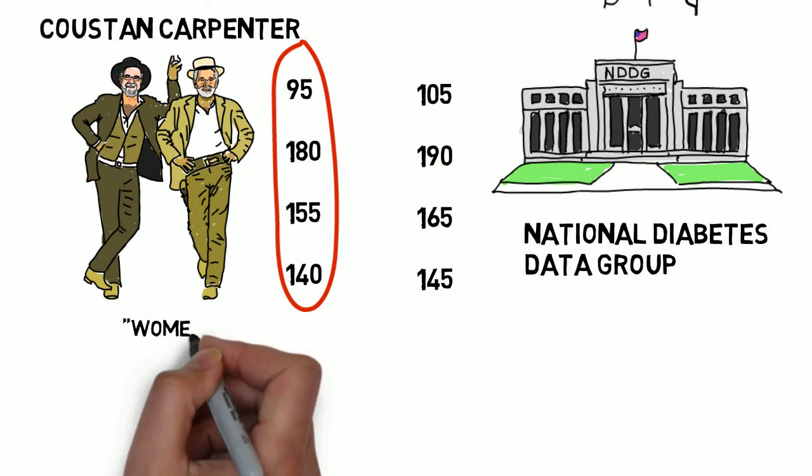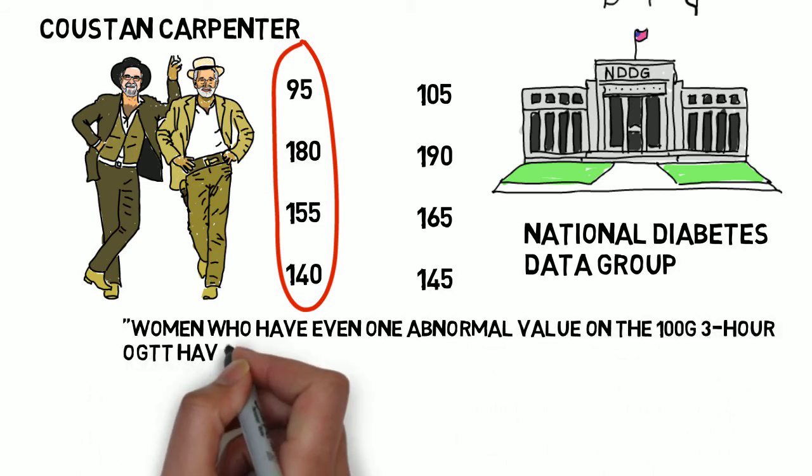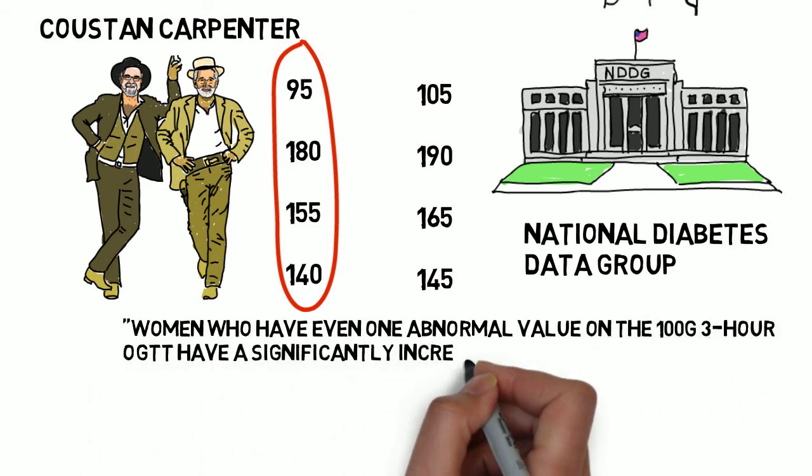Generally, the presence of at least two abnormal values results in the diagnosis of gestational diabetes.